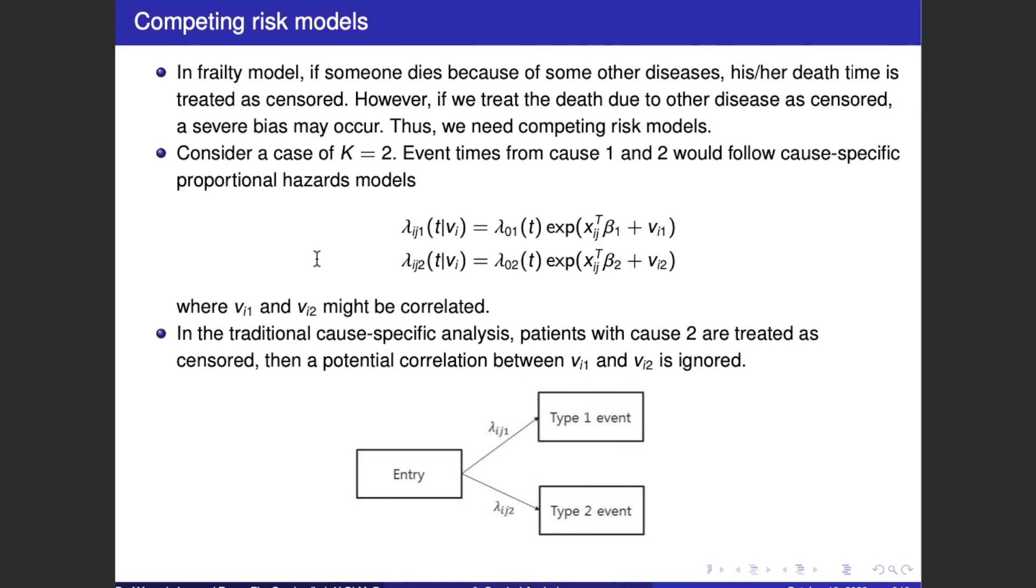Regarding the frailty models, if someone dies because of some other disease, his or her death time is treated as censored. However, if we treat the death due to other disease as censored, a severe bias may occur. Thus, we need competing risk models.